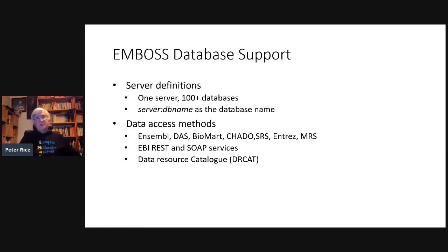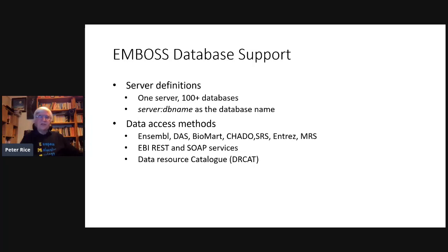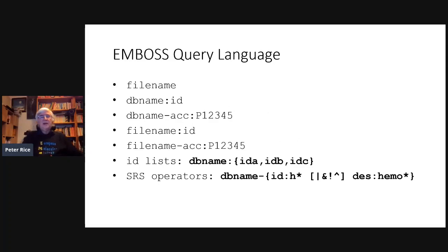We had very extensive database support. You could define data access methods to access data through SRS or indexed flat-file databases — one server with 100 databases, for example. REST and SOAP services could also be accessed, and we built a data resource catalog. Under the hood, there was a query language. If EMBOSS read a sequence, you could specify the file name and it would go through candidate formats to decide what the format was — you almost never needed to tell it which format you were using.